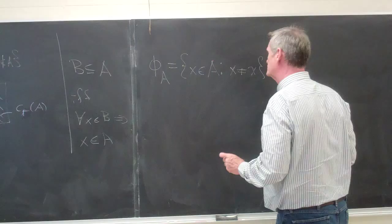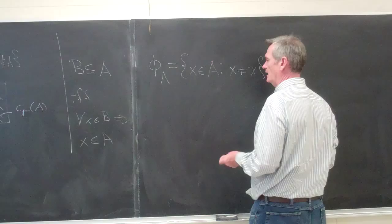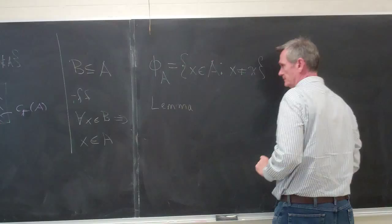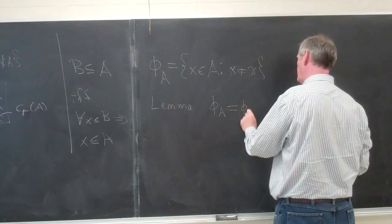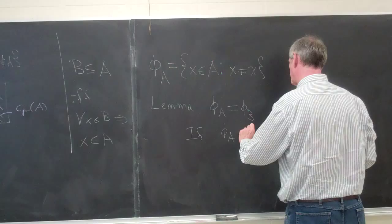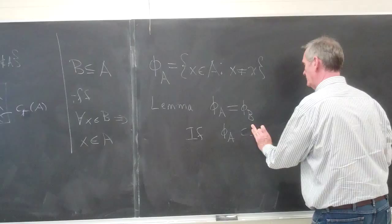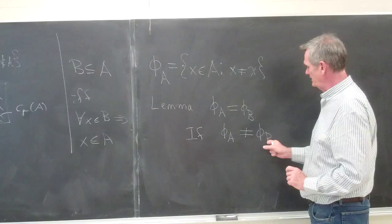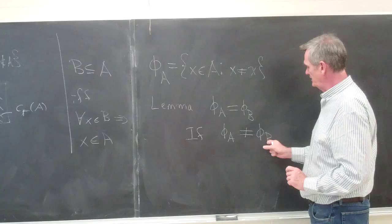So associated to every set, we have an empty set. And there's a little lemma which says that the empty set A is equal to the empty set for B. So there's a unique empty set and it has no elements. And the idea is that if the empty set of A is not equal to the empty set of B, then either there's an element in this set that's not in here or there's an element in this set that's not in there.